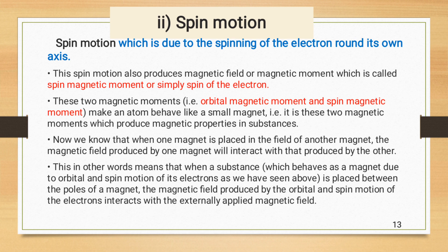These two magnetic moments, for example orbital magnetic moment and spin magnetic moment make an atom behave like a small magnet. It is these two magnetic moments which produce magnetic properties in substances.